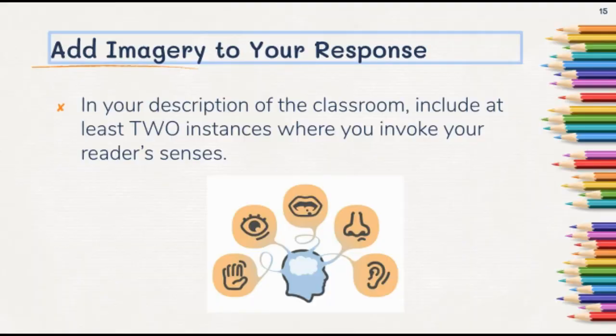In your response, look at what you've put down so far in your description of the classroom or a room in your house, and include at least two instances where you invoke your reader's senses. If you want to get a smell across, describe it in a way that throws your reader into the scene and really captures the mood you're going after. Same with visual description — you want your reader to be able to mentally picture it in their mind.